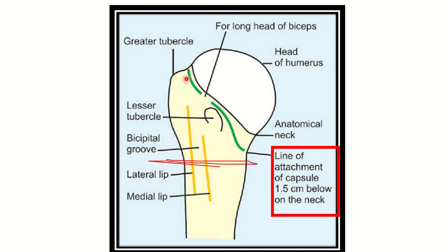In this picture we can see the anatomical neck and the surgical neck. The line of attachment of the capsule is about 1.5 centimeters below the neck, which corresponds to the anatomical neck. So the capsule of the shoulder joint is very close to the anatomical neck of the humerus. The greater tubercle and lesser tubercle are also nearby.